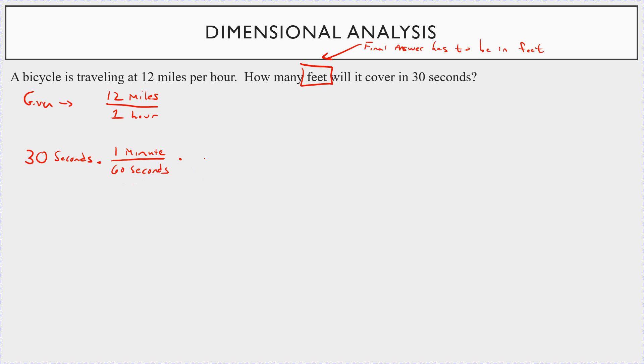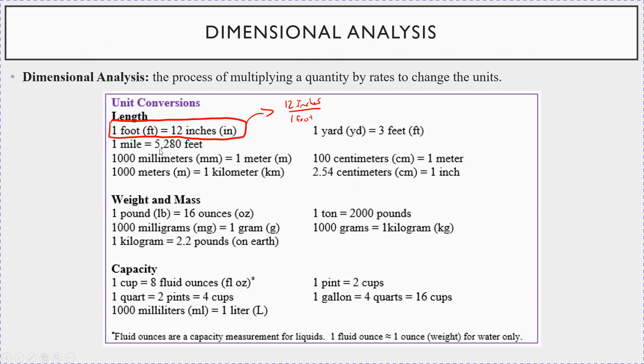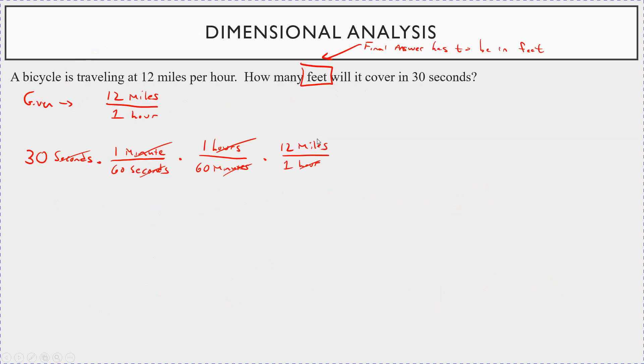Now what's next? There's one hour in every 60 minutes. So minutes are going to cancel. Look, hours, hours in the denominator here. So look, 12 miles for one hour. Now look what's happening. Seconds, seconds, minute, minute, hour, hour, they're canceling. So all I have to do is now get miles to feet. So look, going back, one mile is 5,280 feet. So there's 5,280 feet in one mile. Now look, miles, miles are going to cancel.